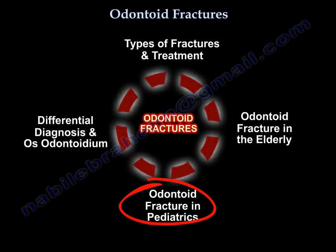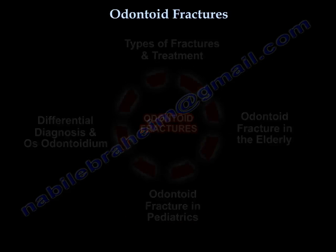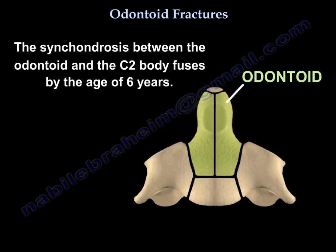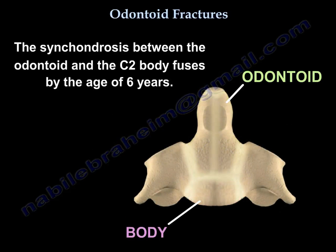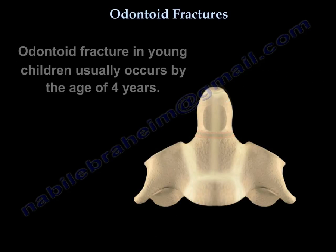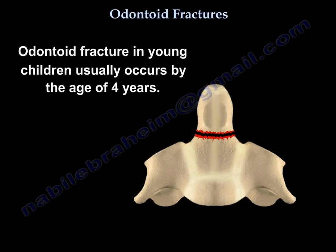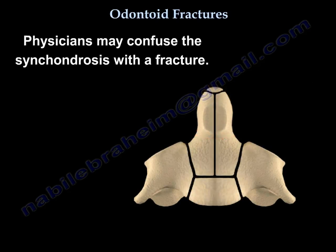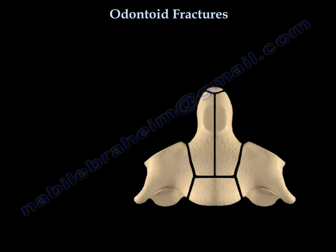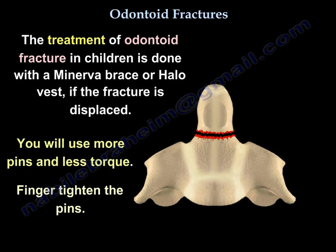Odontoid fractures in pediatrics: the synchondrosis between the odontoid and C2 body fuses by the age of 6. Odontoid fractures in young children usually occur around the age of 4. People may confuse the synchondrosis with a fracture. Treatment in children is a Minerva brace, or a halo vest if displaced — use more pins and less torque; finger-tight the pins.